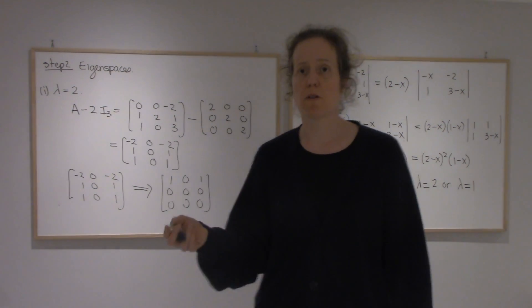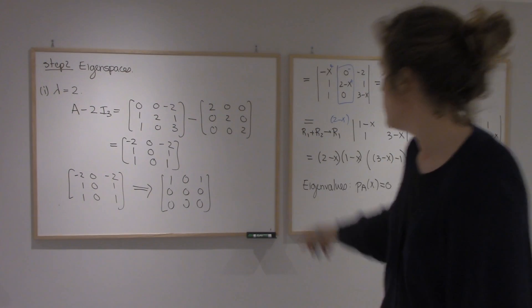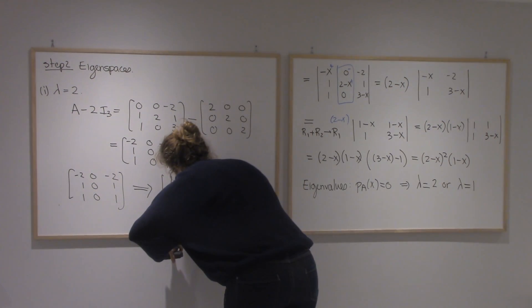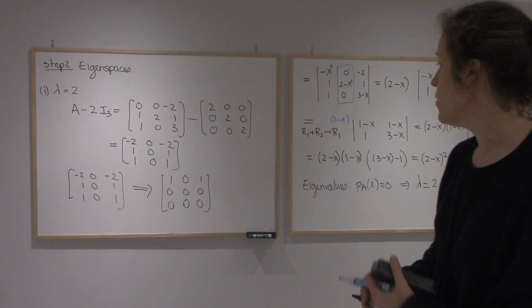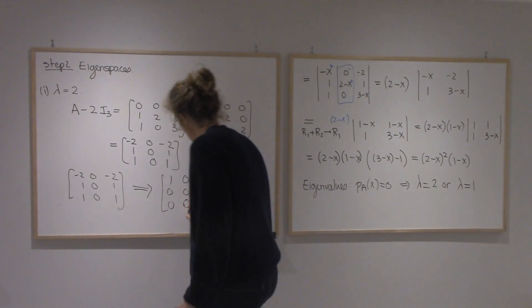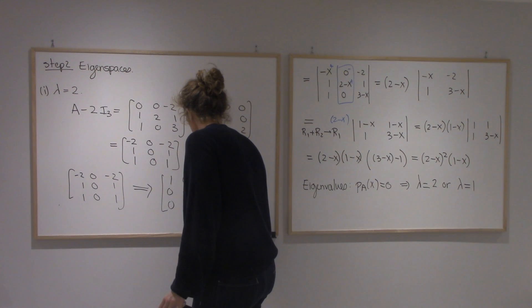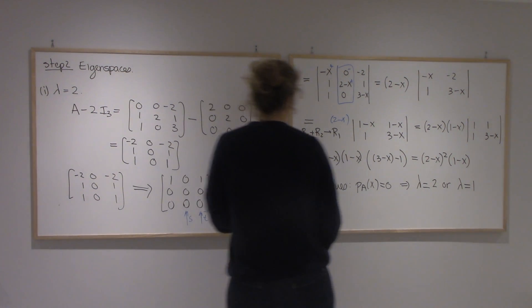All the rows are multiple of the first one, or any of them. Sorry, it's 0. So I have two free variables, the second and the third. So I'm going to use S for this one, T for that one.